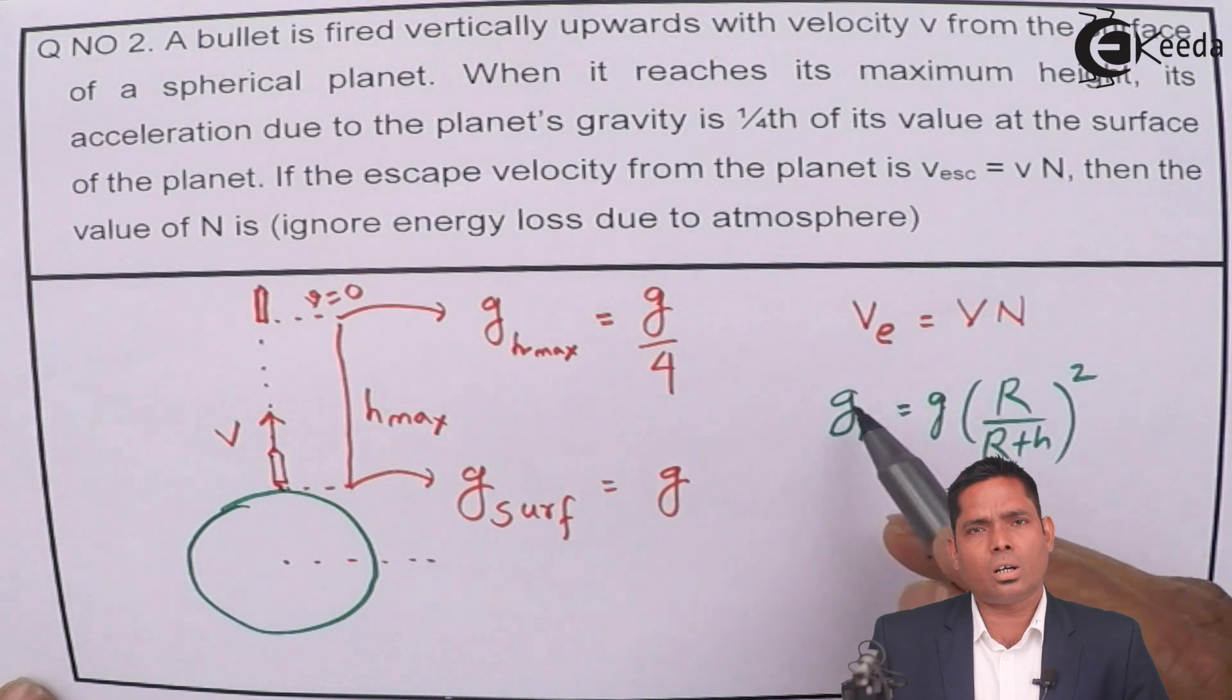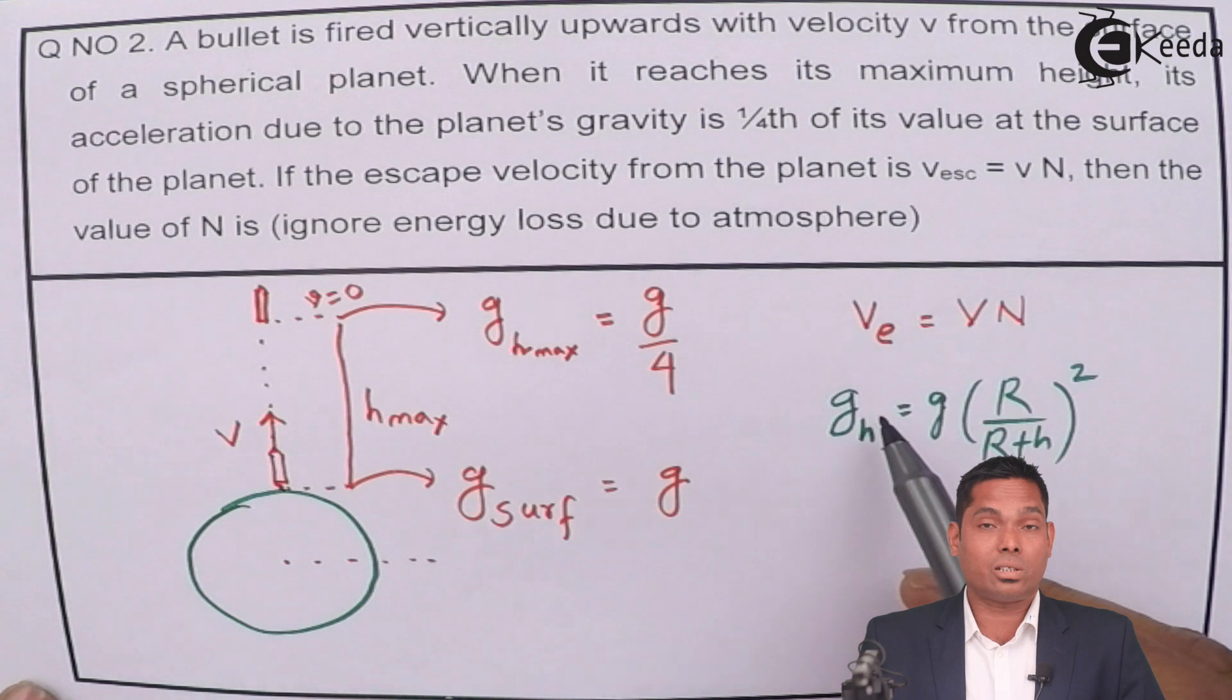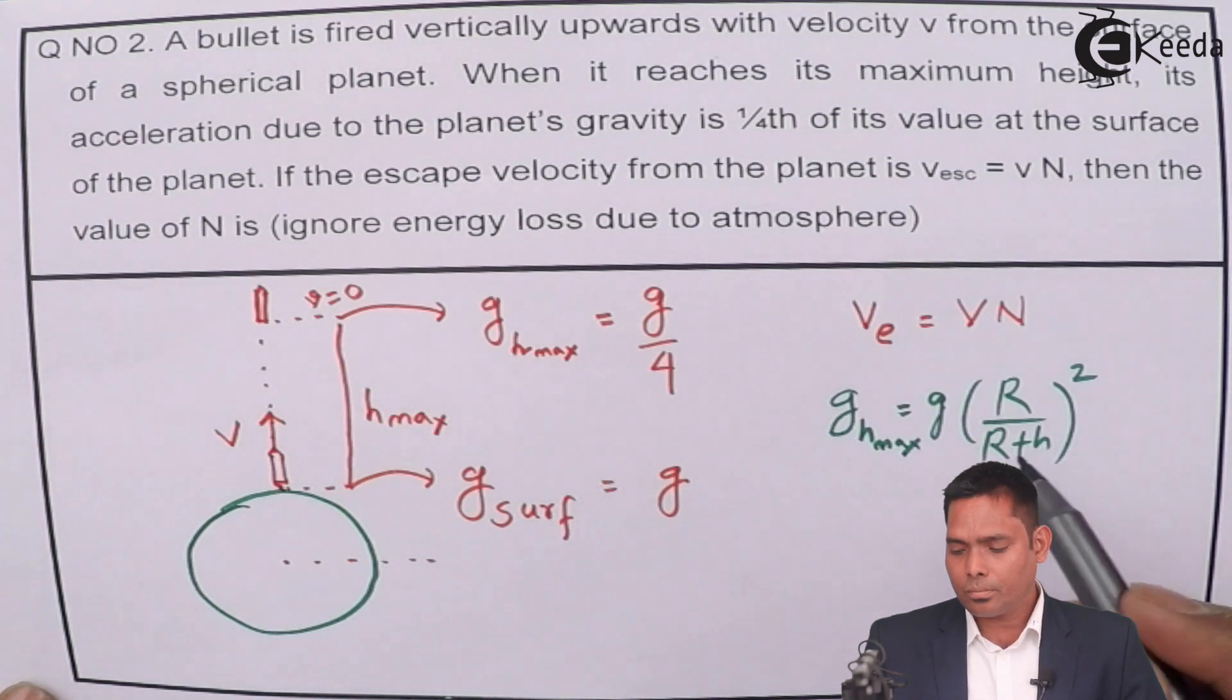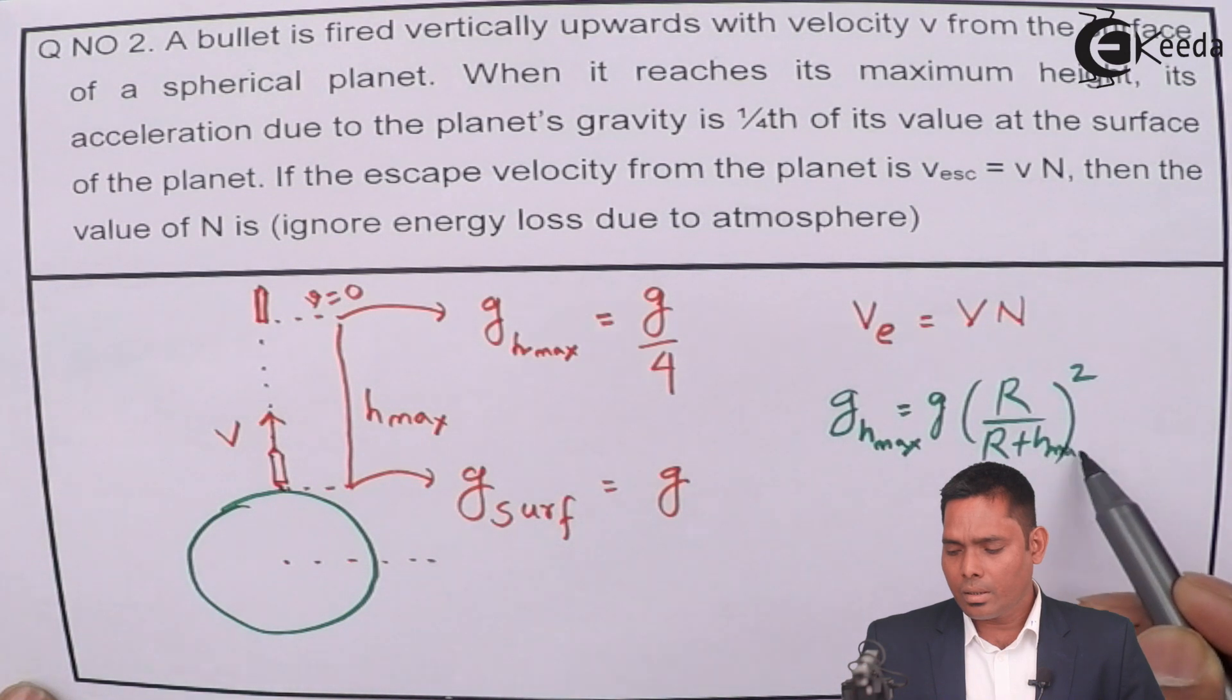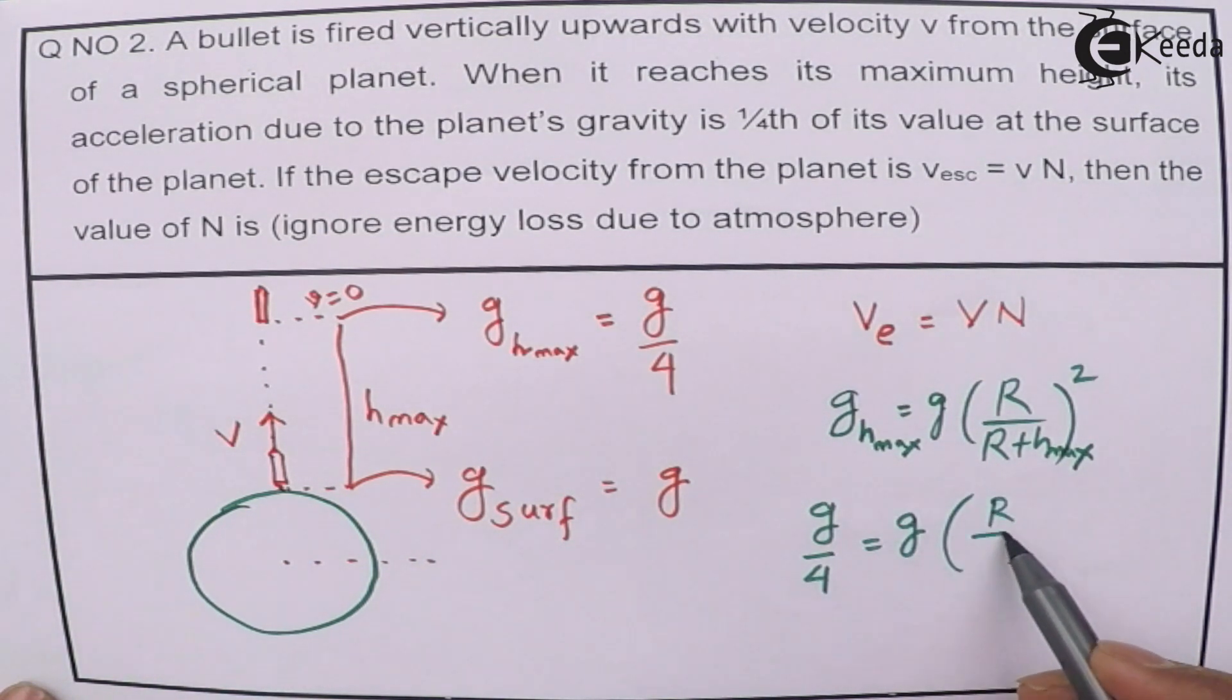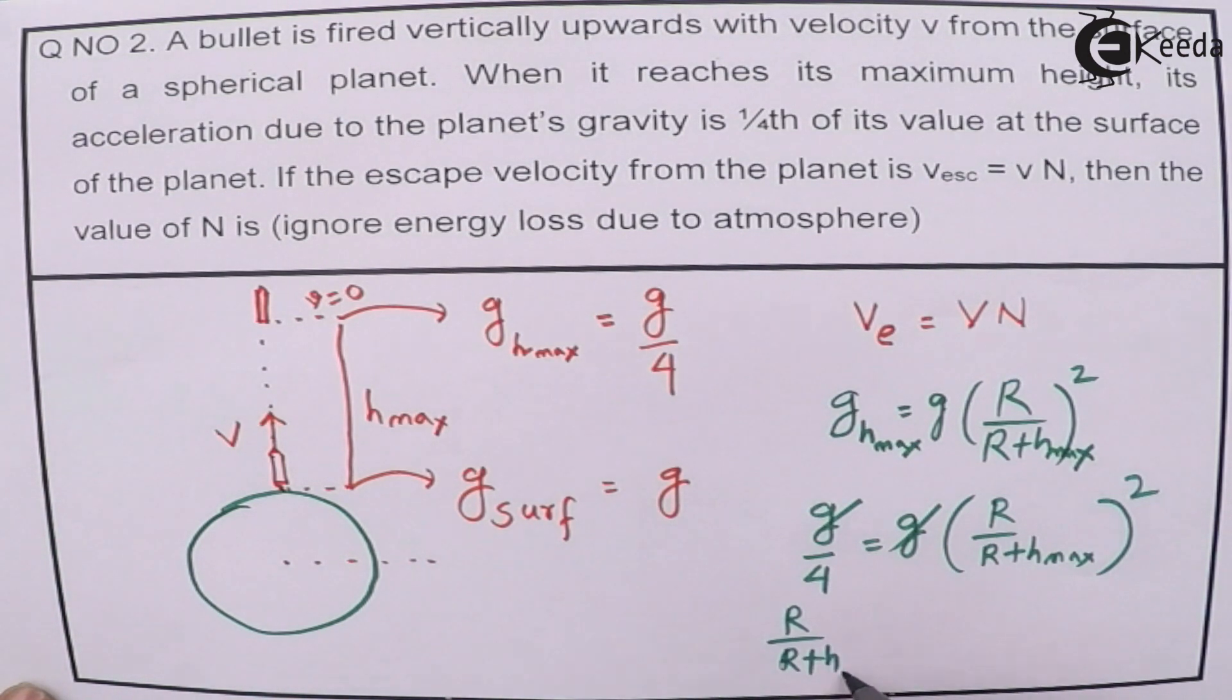This g_h is given as g/4 at h_max. So g/4 = g × R²/(R+h_max)². G cancels out. Taking the square root: R/(R+h_max) = 1/2.